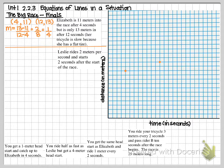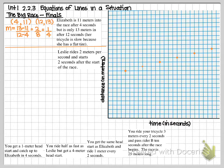I'm going to use that 1/4 slope on my graph to get more points for Elizabeth's graph. Starting at the very first point I graphed, I go up 1 and then right 4 to plot another point, and I continue that across the graph like we did last time. I can also go backwards — down 1 and left 4 — which gives me the starting value. Now let's connect the dots and label this line as Elizabeth.